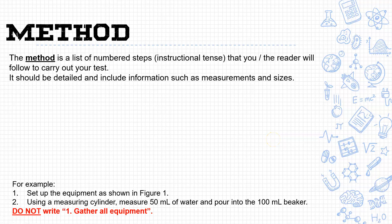The method is a numbered list in instructional tense that you or the reader will follow to carry out your test. This is what you did, but we write it in instructional tense because it's a set of instructions for the person reading it to recreate, just like in the materials.